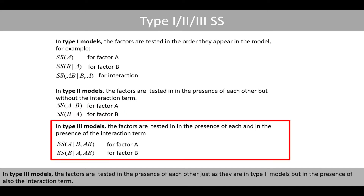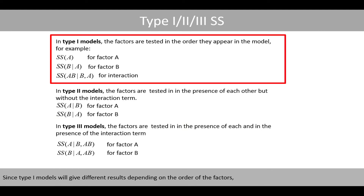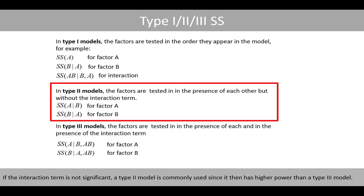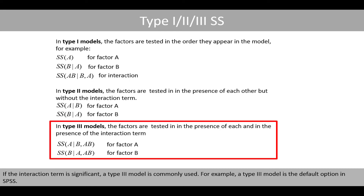In type 3 models, the factors are tested in the presence of each other — just as in type 2 models — but also in the presence of the interaction term. Since type 1 models give different results depending on the order of the factors, one usually selects either a type 2 or a type 3 model. If the interaction term is not significant, a type 2 model is commonly used since it has higher power than a type 3 model. If the interaction term is significant, a type 3 model is commonly used. Type 3 is the default option in SPSS.